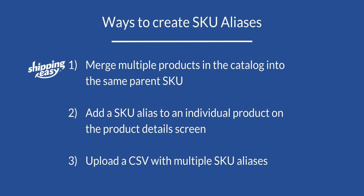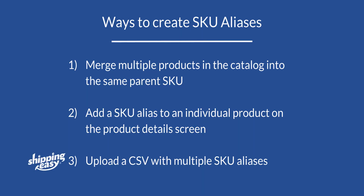So let's talk about the three ways we can add SKU aliases to products. First, if you have the same product listed multiple times with different SKUs, we can merge those products and set one or more of the existing SKUs as an alias. Two, if the product is not yet listed multiple times in your product catalog, we can add aliases manually to each product via the product catalog. And three, we can upload a spreadsheet in CSV format containing aliases for every product that has multiple SKUs.